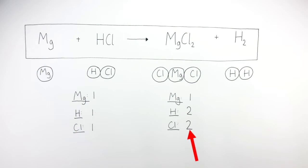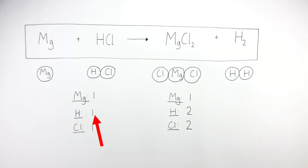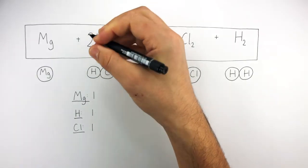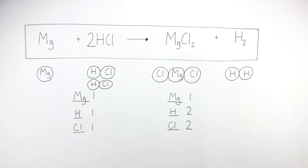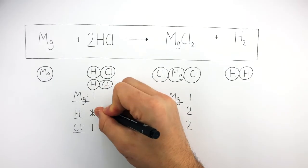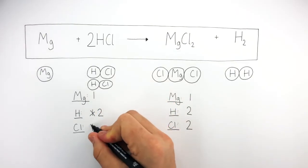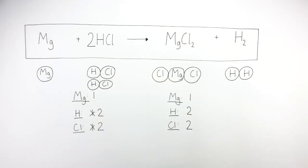We can see there are two chlorine atoms on the right and one chlorine atom on the left. So we put a big two in front of the HCl, which multiplies this by two, so there are now two hydrogen chloride molecules. Below we change the numbers as there are now two hydrogen atoms on the left and two chlorine atoms on the left. The equation is now balanced.